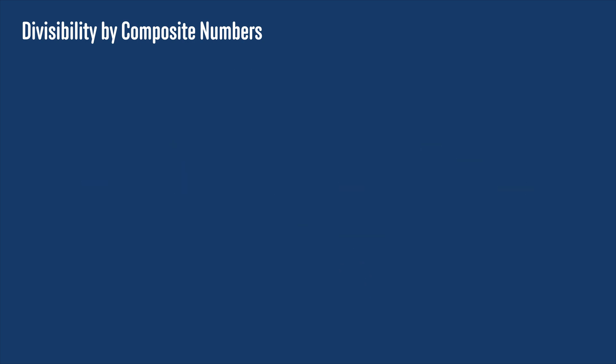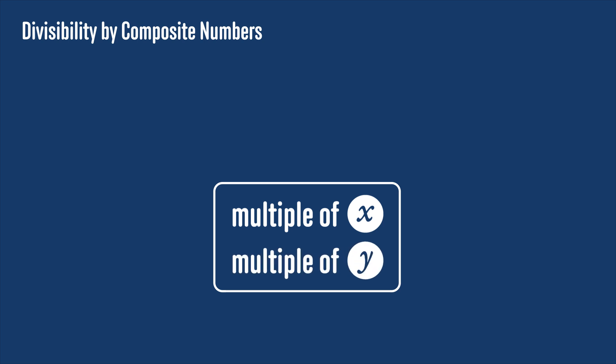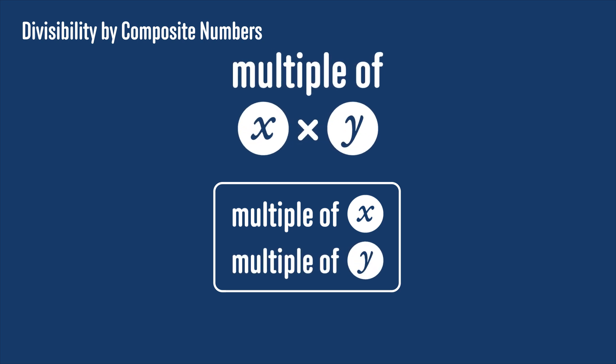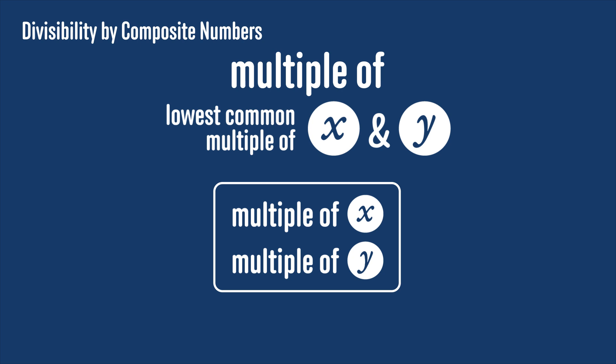So the full result here would say that if you know a number is a multiple of x, and also a multiple of y, then it's not necessarily a multiple of x times y, but it will definitely be a multiple of the lowest common multiple of x and y.